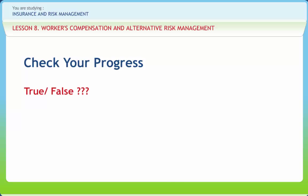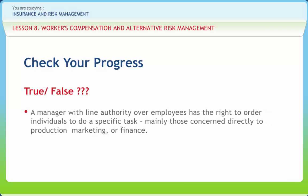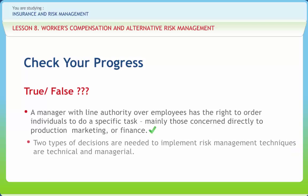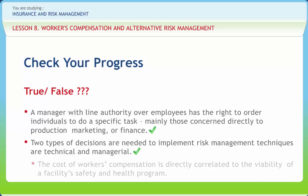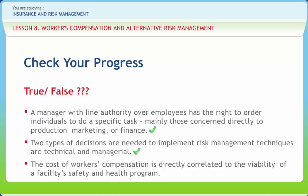Now let us check if we have understood the various concepts discussed in this lesson clearly. A manager with line authority over employees has the right to order individuals to do a specific task, mainly those concerned directly to production, marketing or finance — Right. Two types of decisions needed to implement risk management techniques are technical and managerial — Right. The cost of workers' compensation is directly correlated to the viability of a facility's safety and health program — Right.